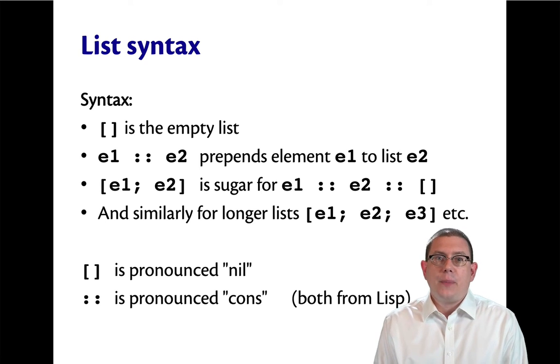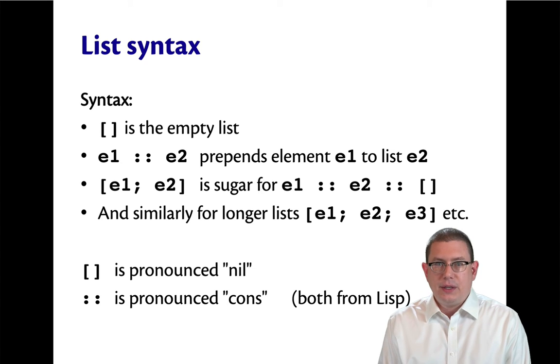The name for that operator is cons. That also comes from Lisp. You can think of it as constructing a new list, taking one element and constructing a new list by putting it on the beginning of another list.